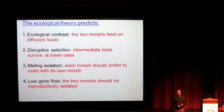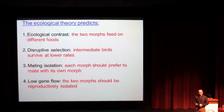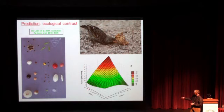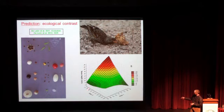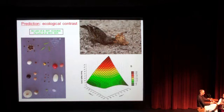For ecological contrast, the morphs should feed on different foods. We've done extensive work characterizing what these birds are feeding on. This one graph shows the relationship between beak size and two different axes of diet variation. The large-beak birds in red are feeding on something very different — they overlap, but they're feeding on something different from the small-beak birds. So there is an ecological contrast between the large-beak and small-beak birds.